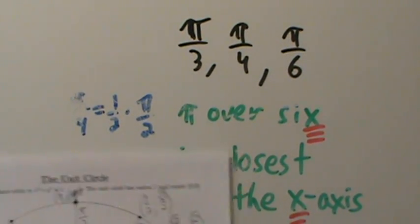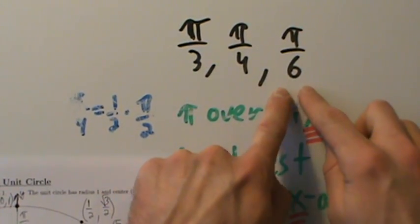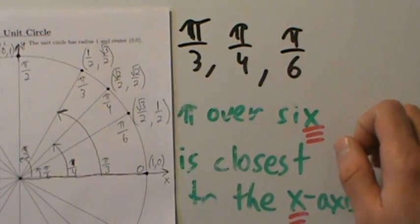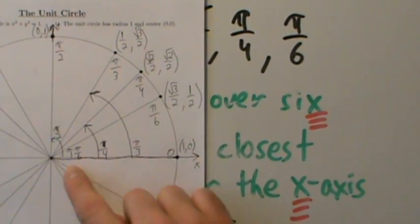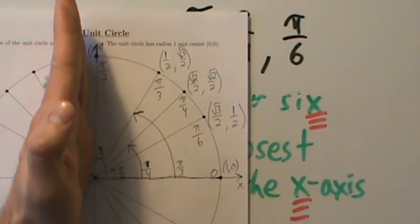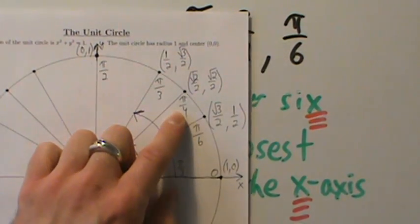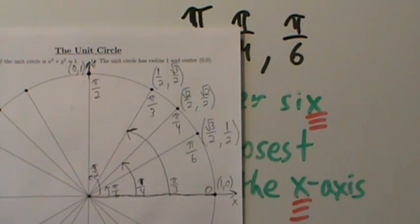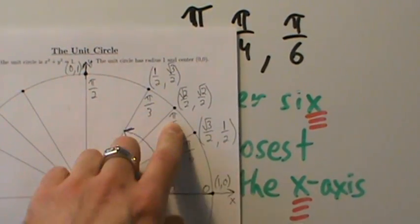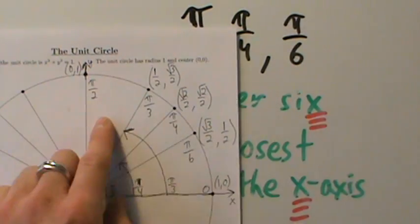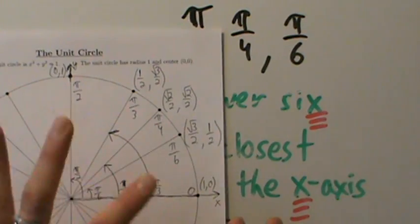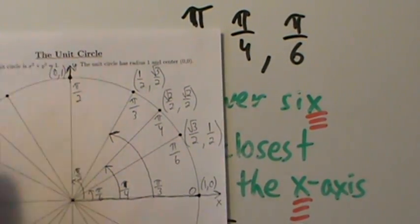Let's summarize the tricks: pi over 3, pi over 4, pi over 6 — larger denominator means a smaller angle. The smallest angle is pi over 6. If you don't like that, remember pi over 6 is closest to the x-axis. And pi over 2 radians is 90 degrees — pi over 4 is half of that, putting you in the middle of the first quadrant. Also: as you move to the right from pi over 2, denominators get larger — pi over 2, pi over 3, pi over 4, pi over 6.